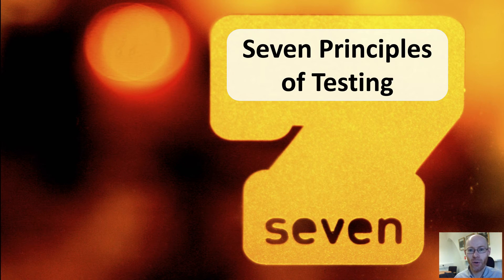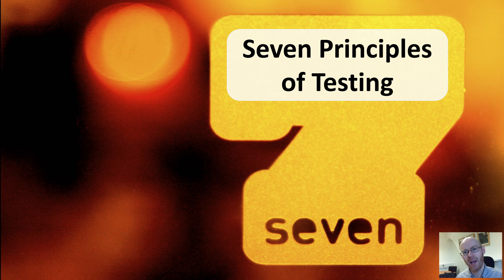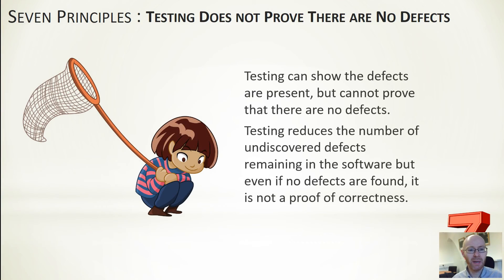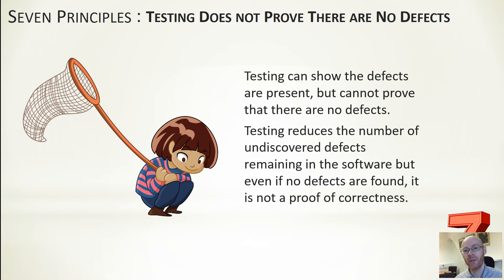We'll round this off with a look at seven principles that underpin testing — words of wisdom that generally hold and are worthwhile adhering to. The first principle: testing does not prove there are no defects. A test can only prove whether or not defects are present. If a test fails, you know there is a defect. If all your tests pass, that doesn't mean the software is bug-free — it just means all your tests passed. Tests show defects; they do not prove an absence of defects. If you're not testing the right areas or in the right way, there may still be defects.